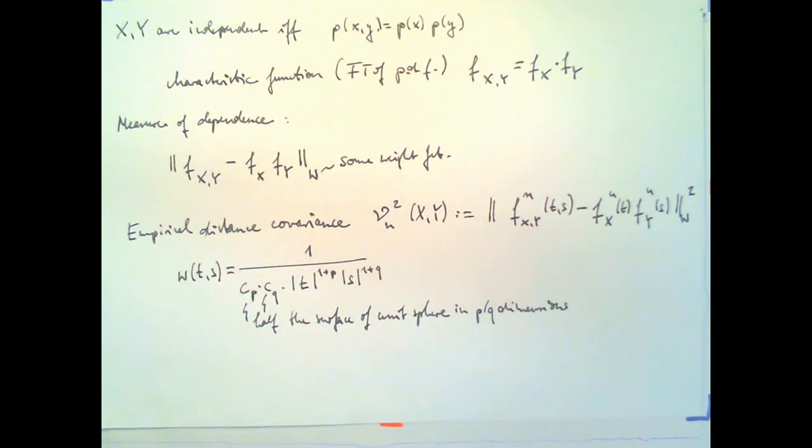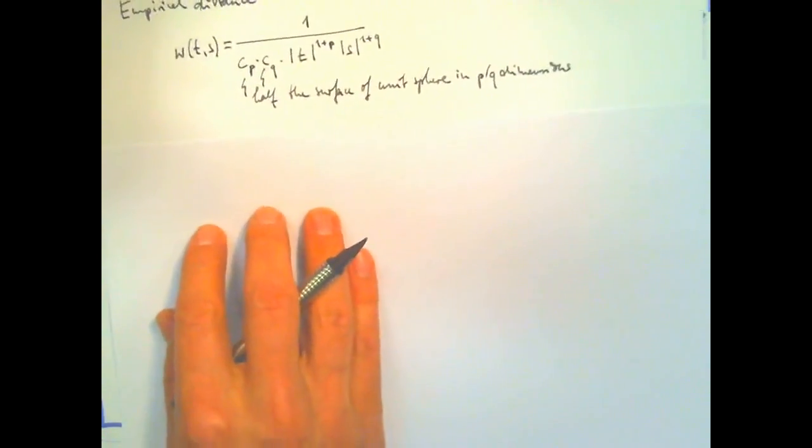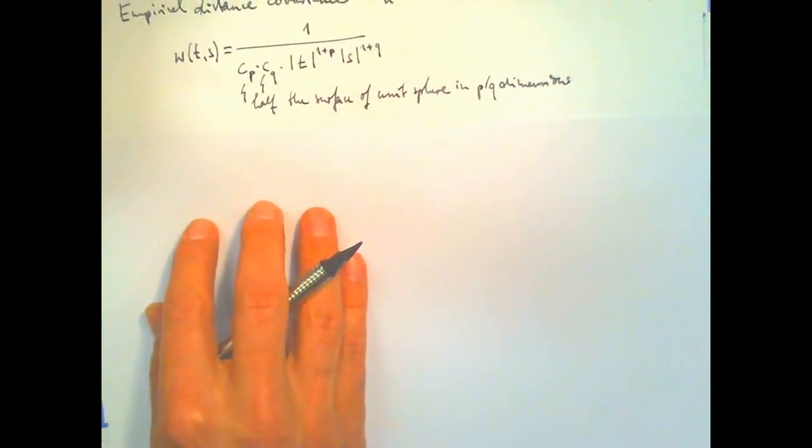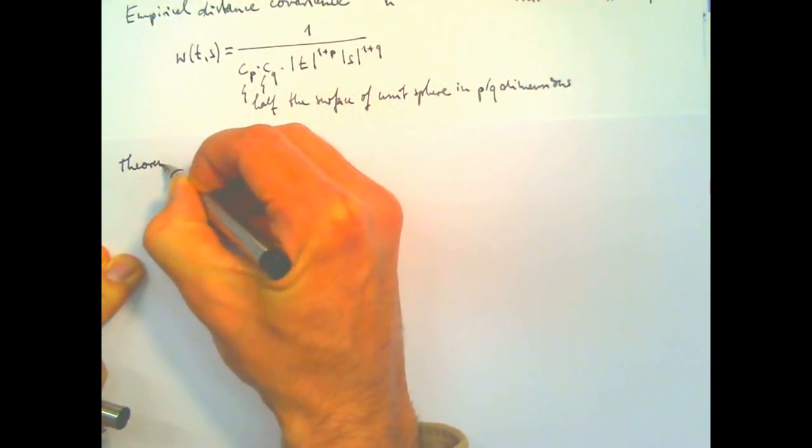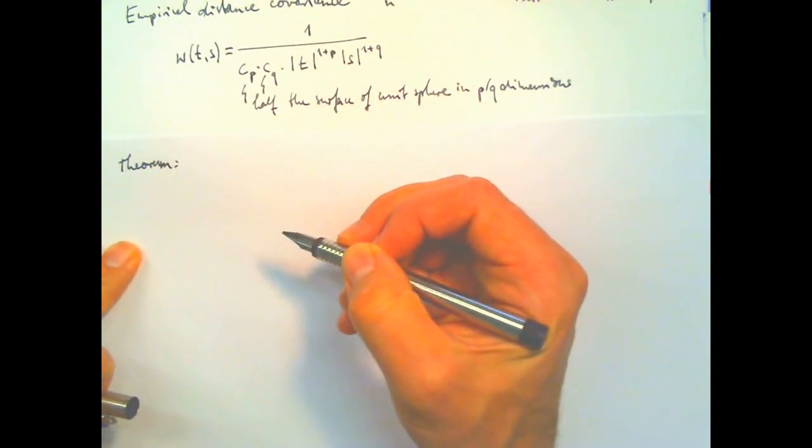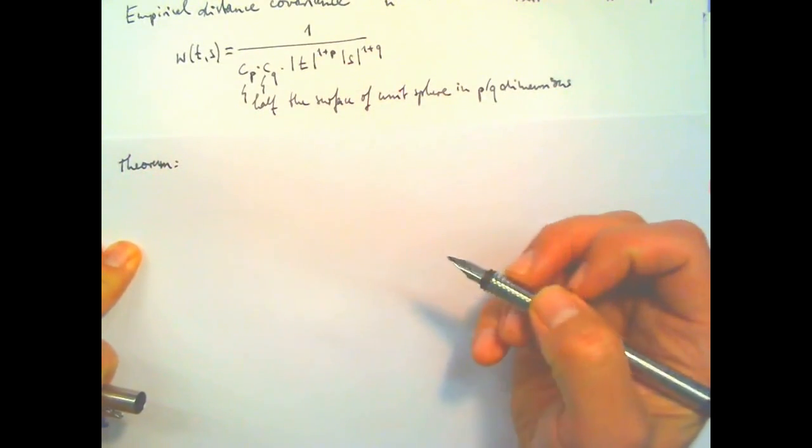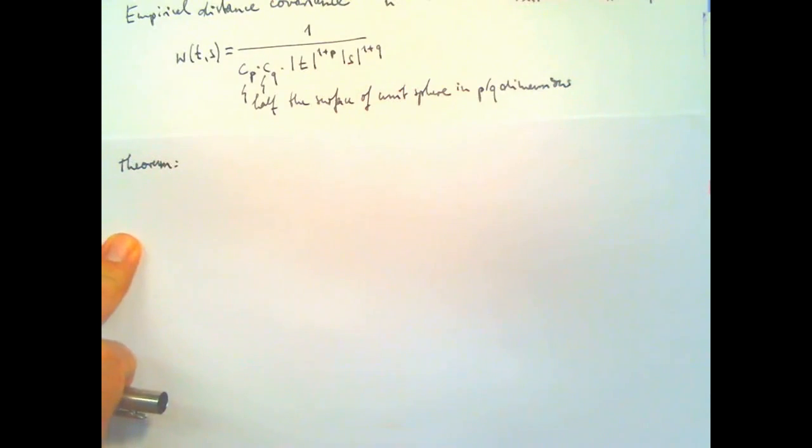So the theorem, which is perhaps at the heart of this paper... What about p and q? Do they just choose an arbitrary or...? No, it's... This is the dimensionality of the random variables. So they have p and q dimensions.